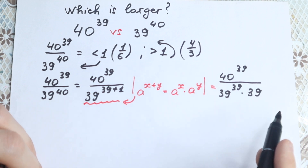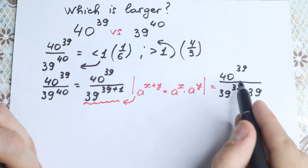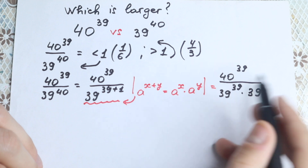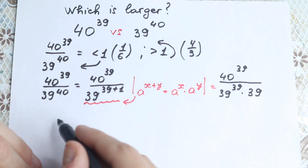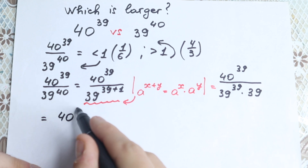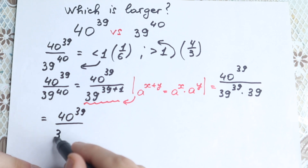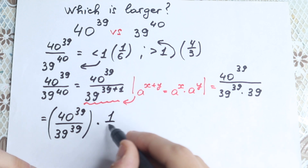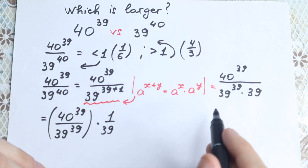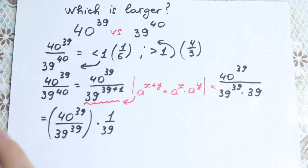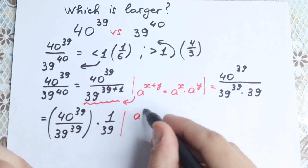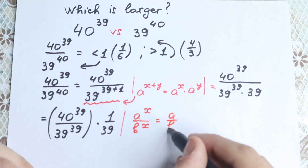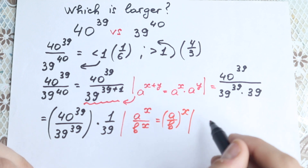What do we do next? Since we have only multiplication and division, we can regroup elements freely. So we group 40 to the power 39 over 39 to the power 39, and multiply by 1 over 39. Now we have a situation like a to the power x over b to the power x — the same exponent but different bases — which we can write as (a over b) all raised to the power x. Applying this rule, we get (40 over 39) raised to the power 39, times 1 over 39.